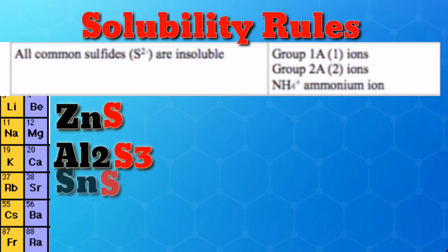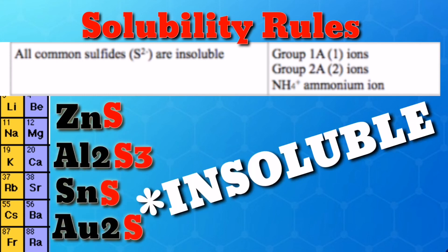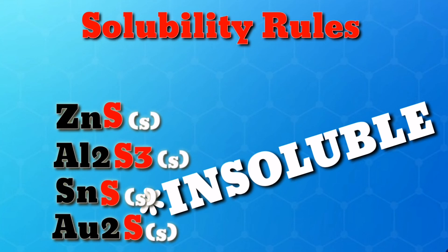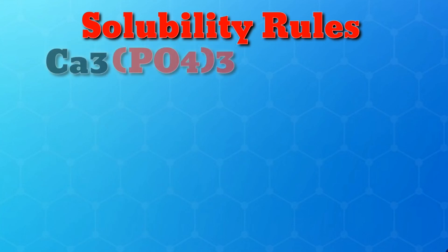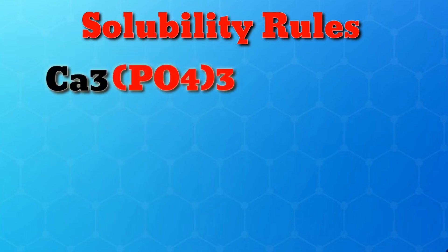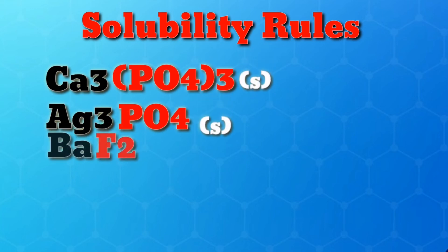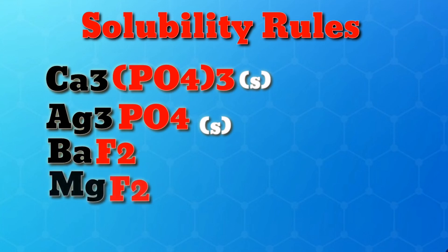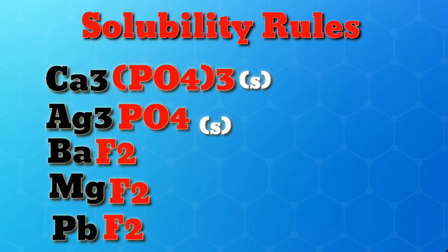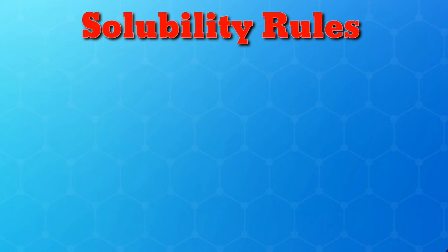Examples of insoluble sulfides include zinc sulfide, aluminum sulfide, tin sulfide, and gold sulfide. Phosphates such as calcium phosphate and silver phosphate are frequently insoluble. Fluorides such as barium fluoride, magnesium fluoride, and lead fluoride are also frequently insoluble. That covers all the solubility rules — you should be ready now; it's your turn to practice.